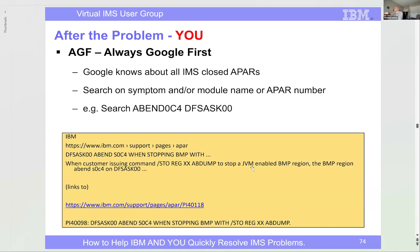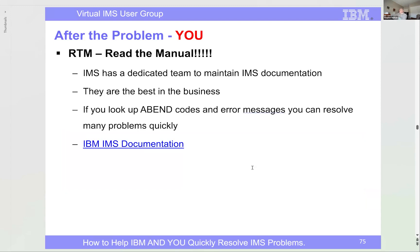Google also knows about closed APARs. If you see an OC4 in DFS ASK00, search 'abend OC4 DFS ASK00' and it'll give you a link to the relevant APAR. It doesn't know about open APARs, but as soon as one is closed, Google knows about it. If necessary, read the dump directly. IMS has a dedicated team maintaining the IMS documentation — they are the best in the business. Every day these manuals are updated.